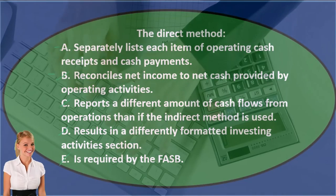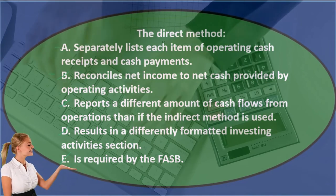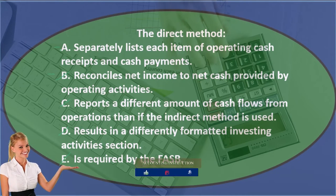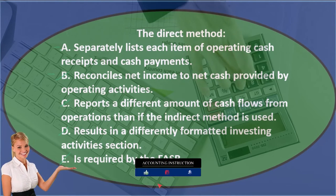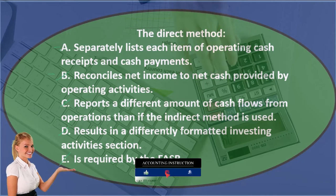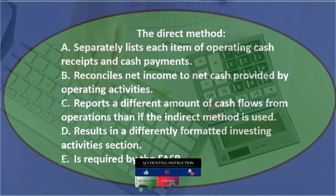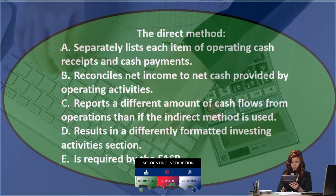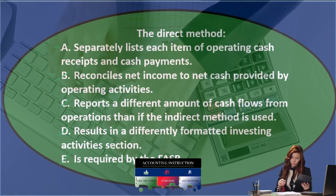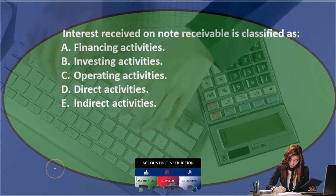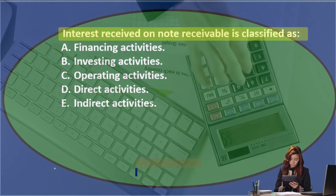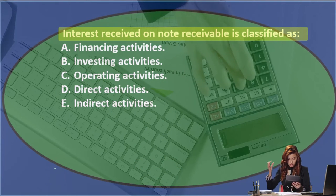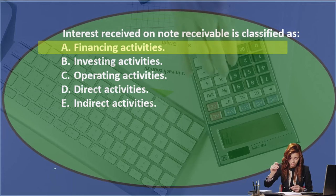Between A and B: option B — reconciling net income to net cash provided by operating activities — describes the indirect method. Therefore, the direct method is best described by option A: it separately lists each item of operating cash receipts and cash payments, essentially converting income statement items like revenue and expenses to a cash basis, such as cash received from customers minus cash paid for expenses.